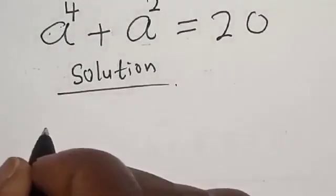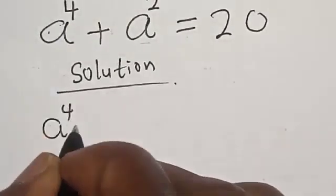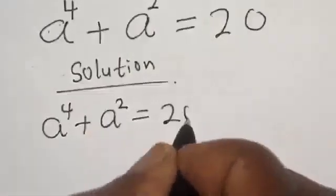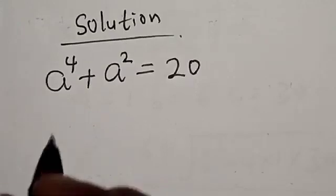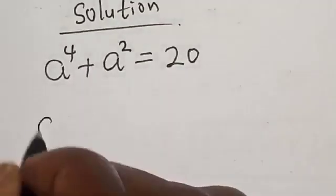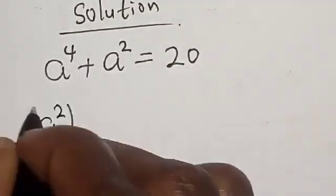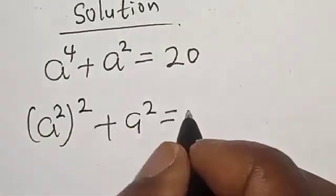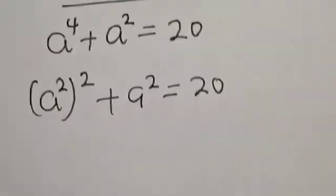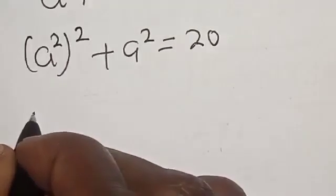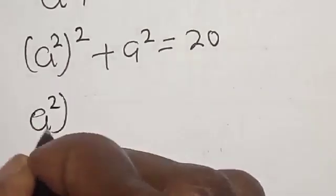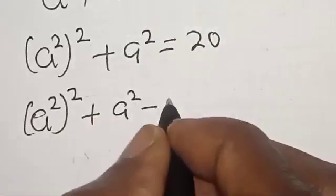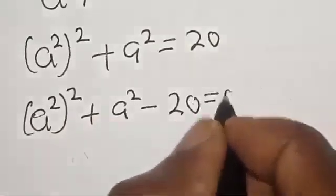We have the given equation, a raised to power 4 plus a square is equal to 20. Now, a raised to power 4 is the same as a square squared plus a square is equal to 20. Now, we have a square squared plus a square minus 20 is equal to 0.